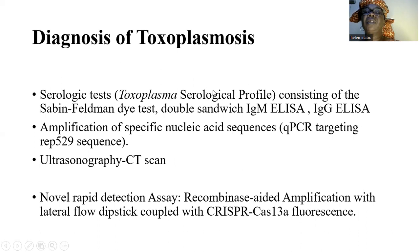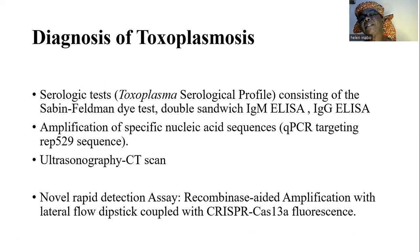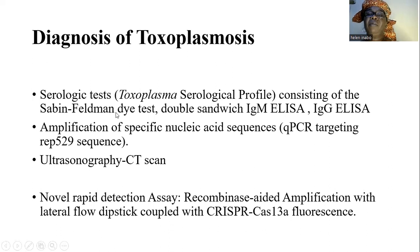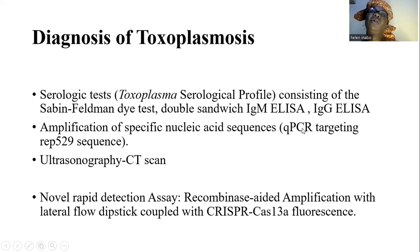Now let's quickly look at the diagnosis of toxoplasmosis. Mainly, through serological tests, this will involve the use of the double sandwich IgM ELISA or IgG ELISA — ELISA means enzyme-linked immunosorbent assay. Also, the Sabin-Feldman dye test can be used. You also have the PCR, which is the polymerase chain reaction, involving the amplification of specific nucleic acid sequences.